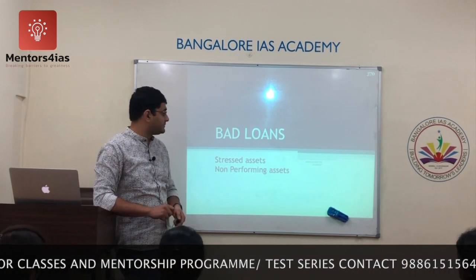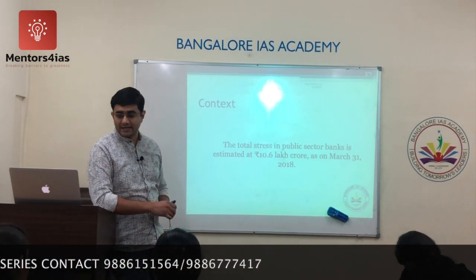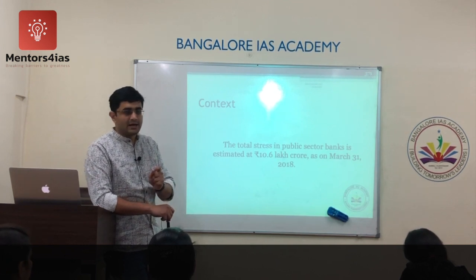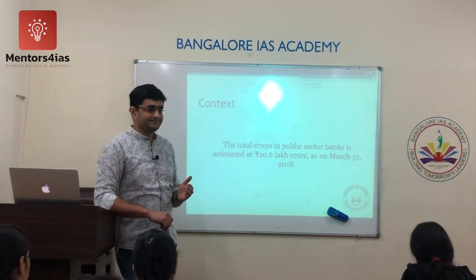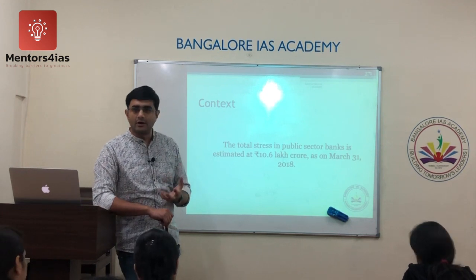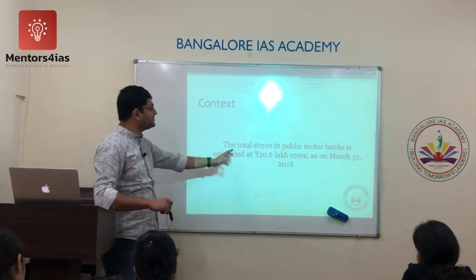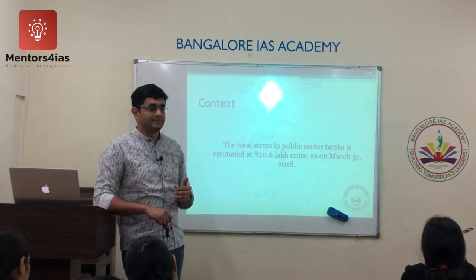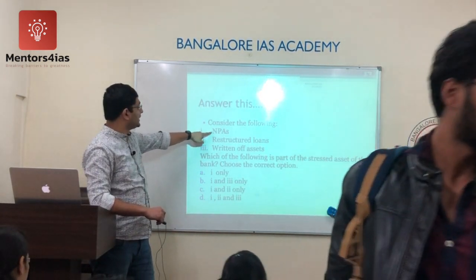To understand the context: based on last year's data, the total stressed assets in public sector banks amounted to 10 lakh crores. That means 10 lakh crores worth of loans given by public sector banks has become NPA — it is under stress. Because banks are an important player in our economy, the economy is also under stress as a result. There is a danger that this money may never be repaid or recovered, and it will become a loss for the banks.